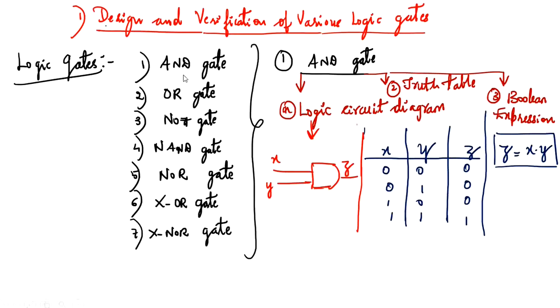The basics will be the three gates: AND, OR, and NOT. But using the combination of these three gates, we will design these four gates: NAND, NOR, XOR, and XNOR.